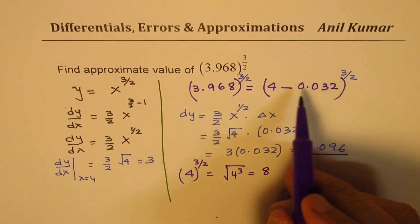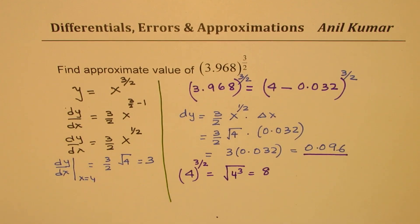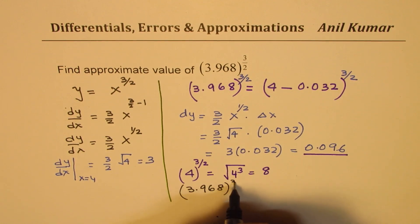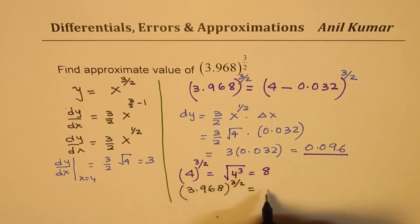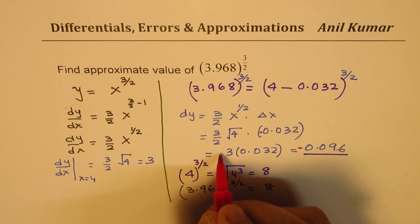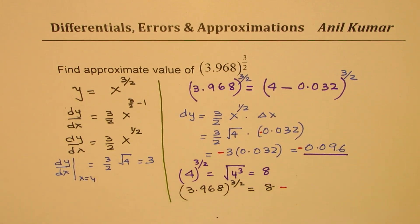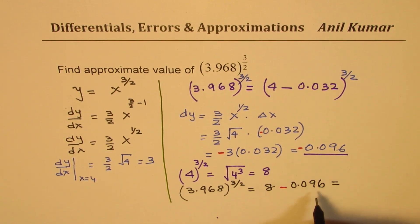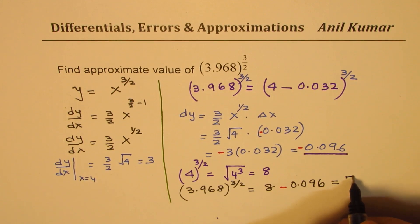Therefore, we can write our answer now. So we have 3.968 to the power of 3 over 2 should be equal to 8 minus 0.096, since this was a negative change. So it is slightly less than 8. Taking away 0.096, that is 4 less, so 7.904 will be your answer. That is how you get your solution.